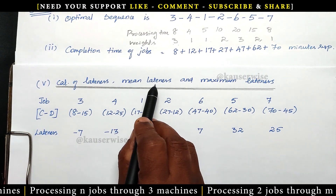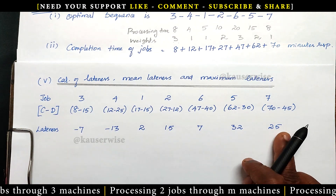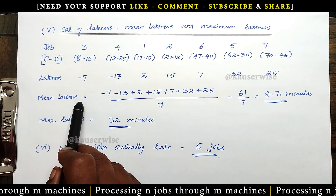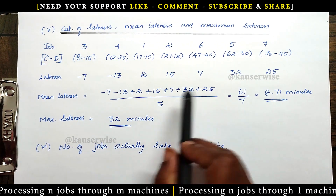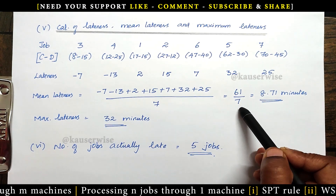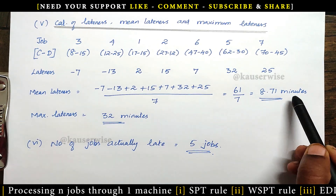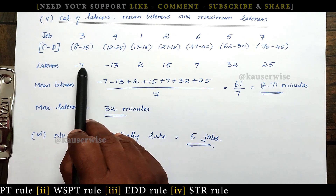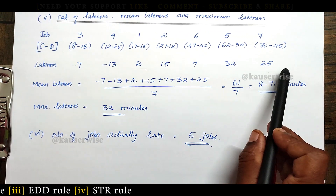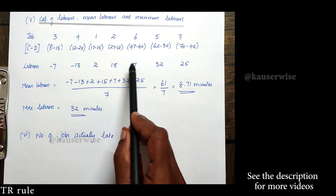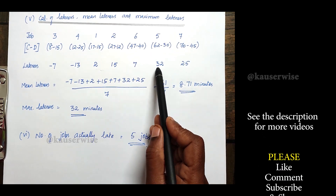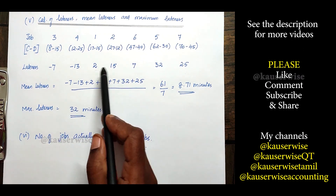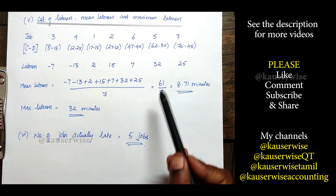Mean lateness means average — find the total lateness divided by the number of jobs, which is 7. So 61 divided by 7 equals 8.71 minutes; this is the mean lateness. For maximum lateness, looking at the positive lateness values: the maximum is 32 minutes. For number of jobs actually late: counting the jobs with positive lateness — 1, 2, 3, 4, 5 — so 5 jobs are actually late.